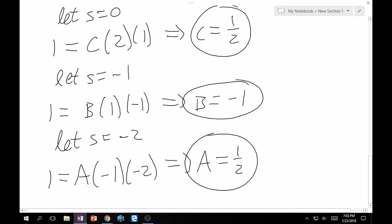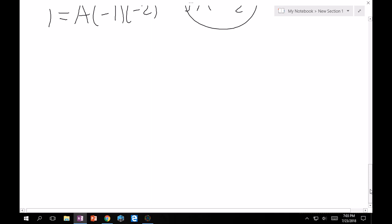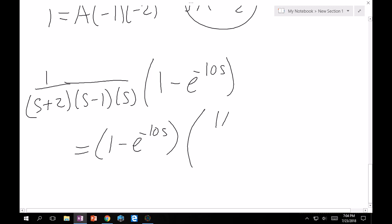Awesome. So what this means is that 1 over s(s+2)(s+1), all of that times, now we can bring this back, 1 - e^(-10s). All of this is now equal to the quantity (1 - e^(-10s)), so we've left that alone, which is good. And then we put in our constants from our partial fraction decomposition. So 1/2 over (s+2) plus -1 over (s+1) plus 1/2 over s.